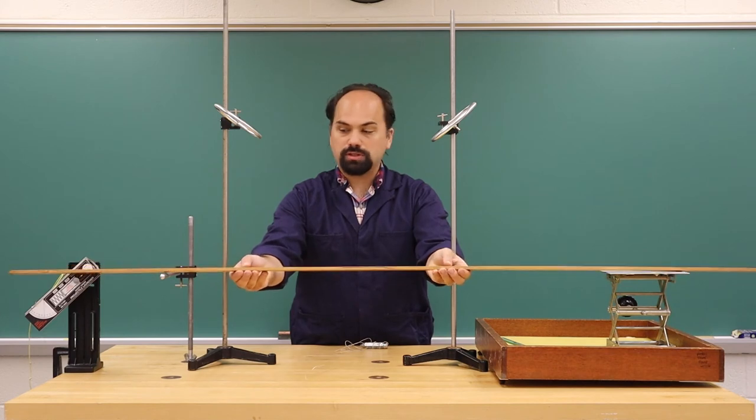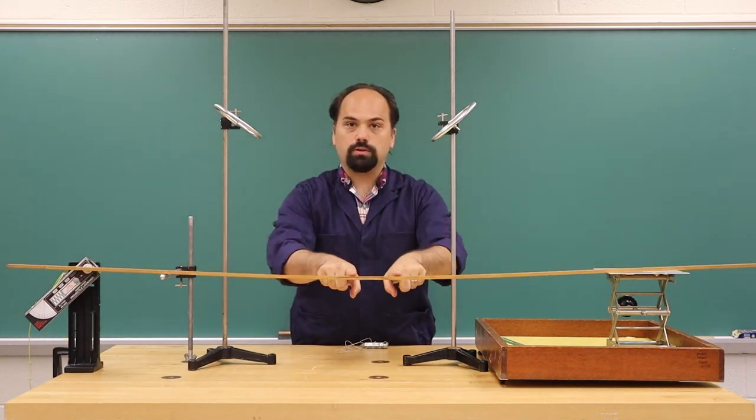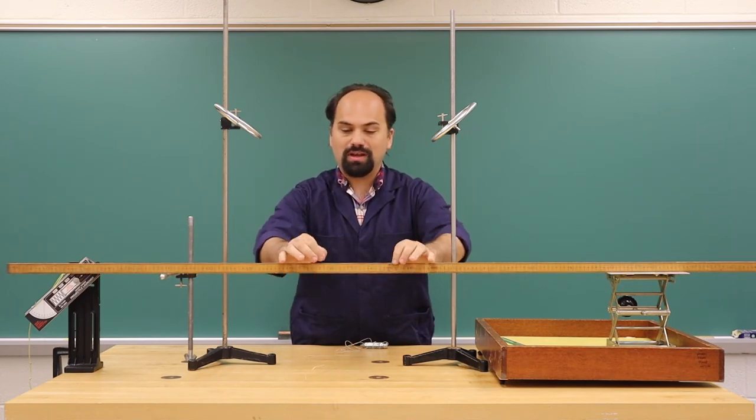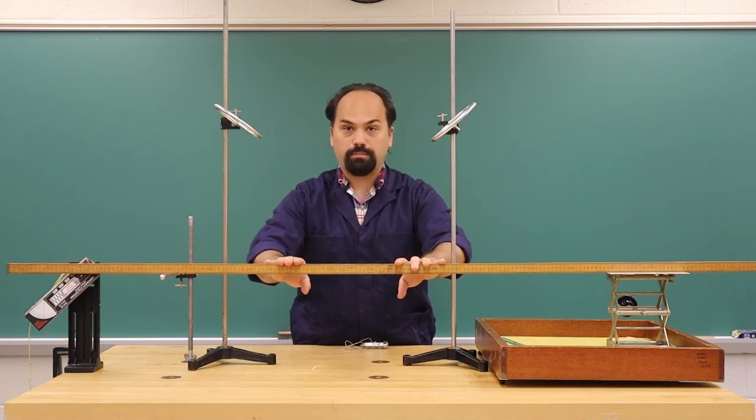But if you put the two-meter stick so that its wide side is up, the two-meter sticks can get a bit of a bend in them. So we want to make sure to always be using the thin edge up on the meter sticks so there isn't that bend.